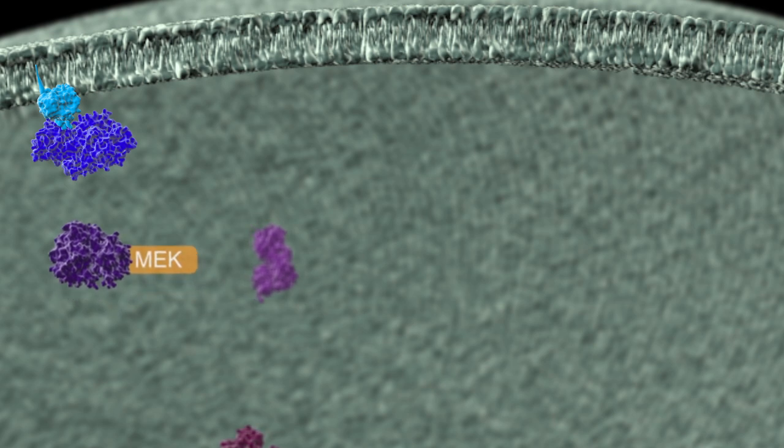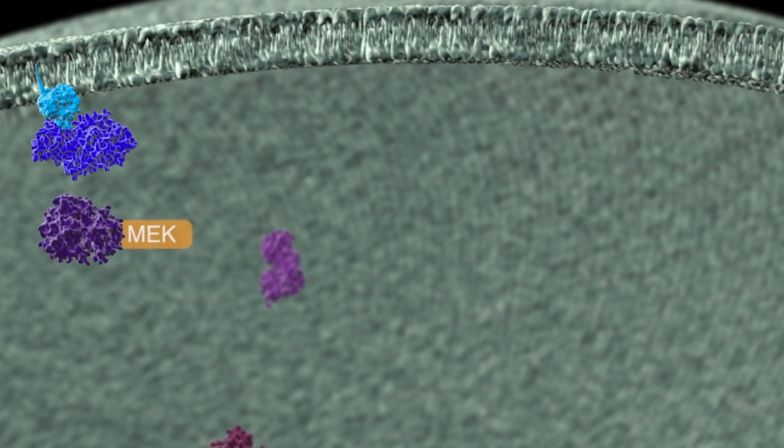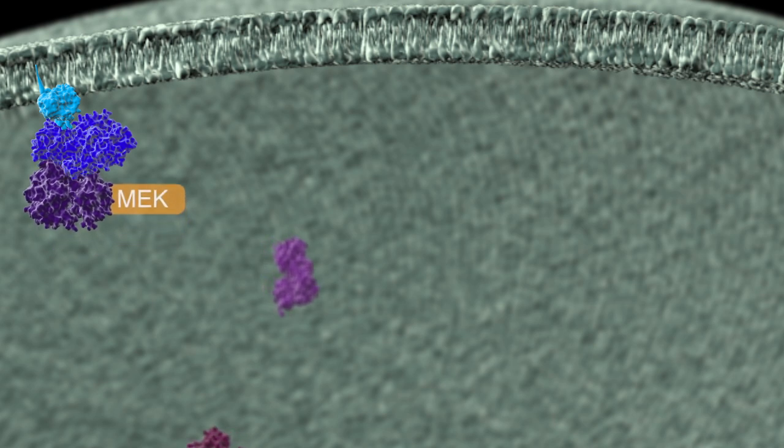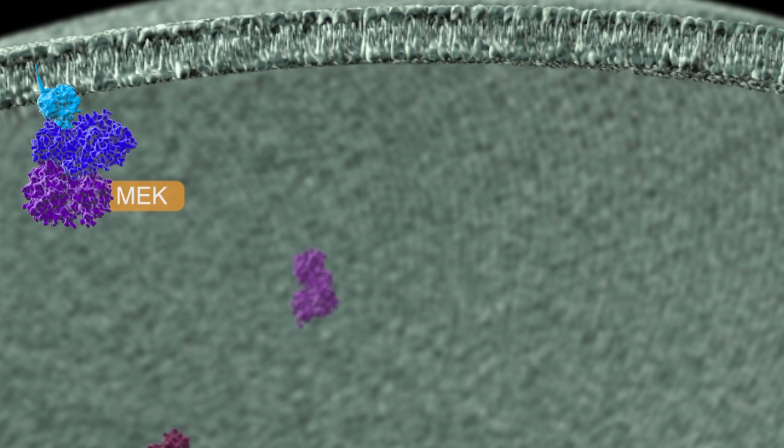Fully activated RAF in turn phosphorylates MEK1 and MEK2, the second-tier kinases, or MAPKKs, of the MAPK ERK pathway. MEK1 and MEK2 must be phosphorylated on two serine residues to be fully activated.